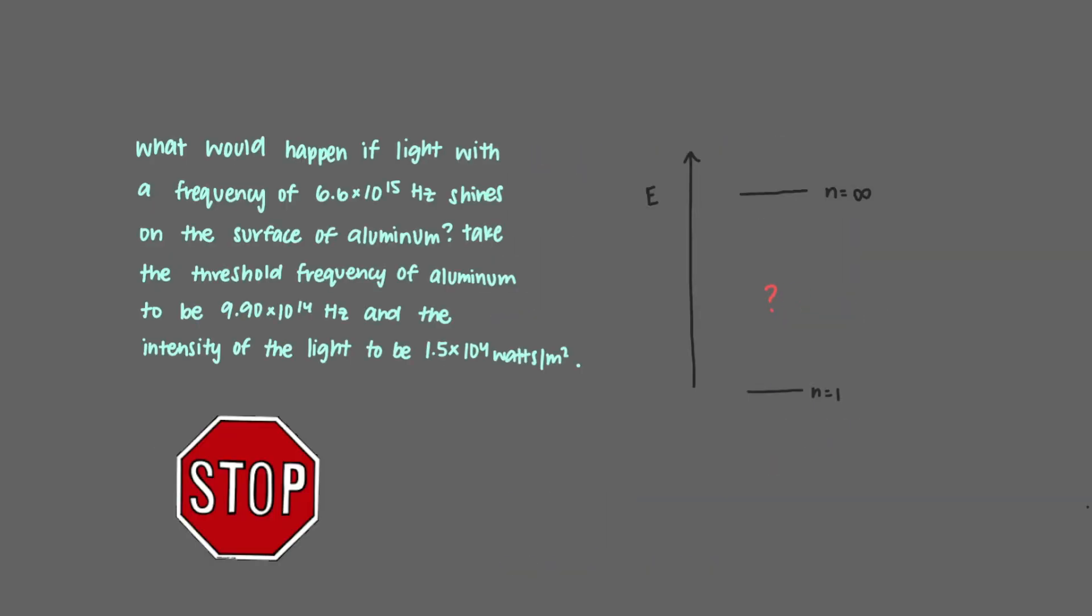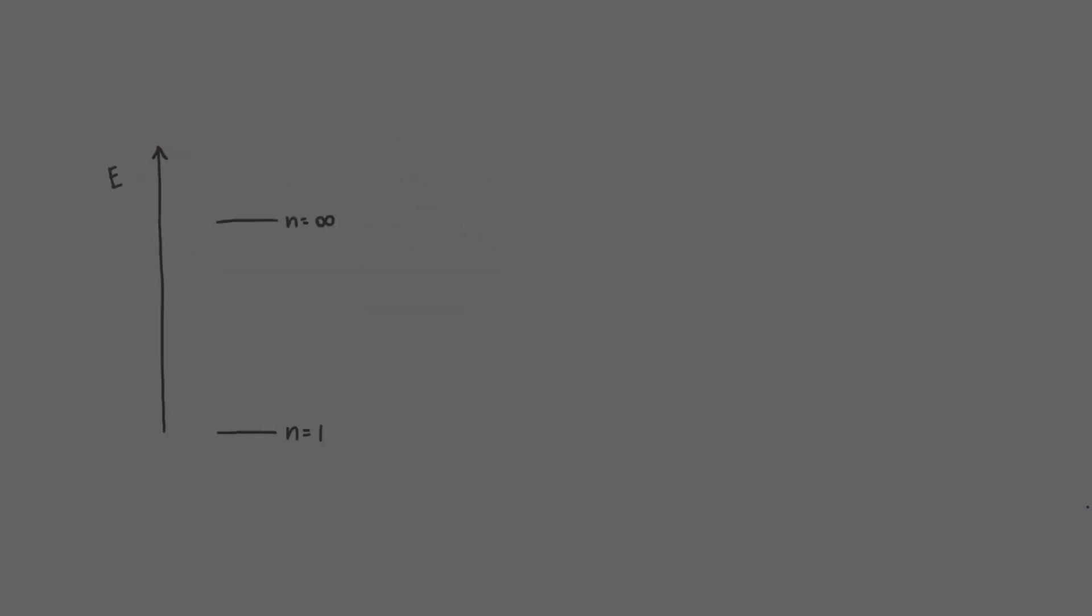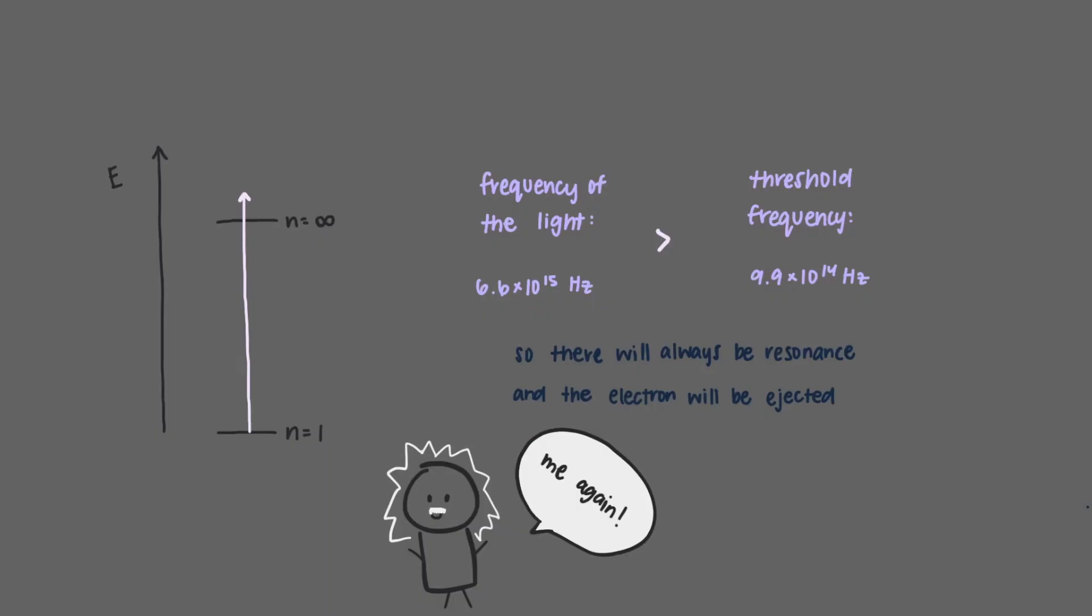What would happen if light with this frequency shines on the surface of aluminum? Take the threshold frequency of aluminum to be this, and the intensity of the light to be this many watts per square meter. So, it turns out that there is something weird that happens. If the frequency of the light is greater than the threshold frequency, then it will always be resonant with a change in the electron, and the electron will be ejected. This is also what Einstein observed.